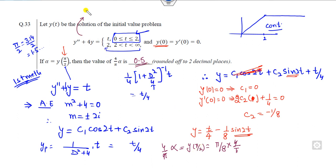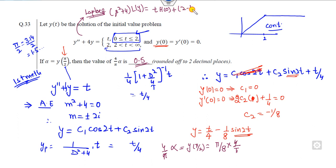The second method is to use the Laplace transformation. Taking the Laplace transform gives (s² + 4) × L{y}. On the right-hand side, you can write the function using the unit step function as t·h(0) + (2 - t)·h(t - 2) + 2·h(t - ∞). The last term is clearly 0. Since π/2 < 2, at π/2 the step function terms reduce to the same result.